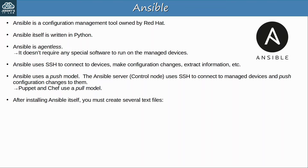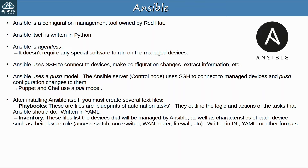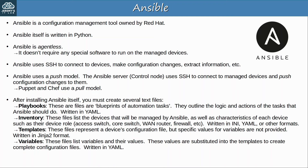After installing Ansible, you must create several text files. Playbooks are the blueprint of automation tasks — they outline the logic and actions of the tasks that Ansible should do, and these playbooks are written in YAML. Inventory files list the devices that will be managed by Ansible, as well as their characteristics such as device role: access switch, core switch, WAN router, firewall, etc. These inventory files can be written in formats such as INI or YAML. Templates represent a device configuration file but specific values for variables are not provided — for example the hostname and IP addresses — and these templates are written in Jinja2. Finally, variable files list variables and their values. These values are substituted into the templates to create complete configuration files, and these files are written in YAML.